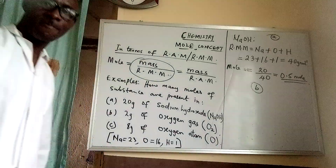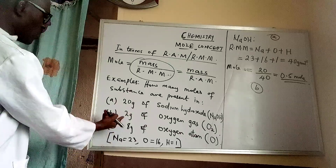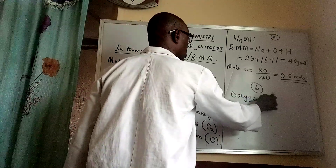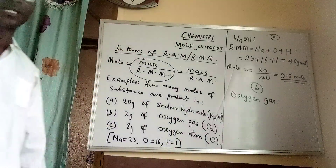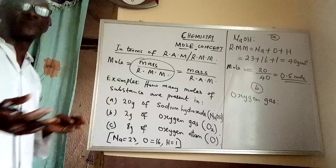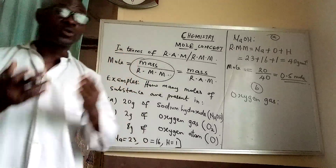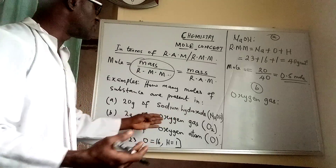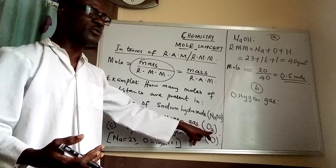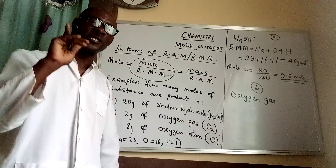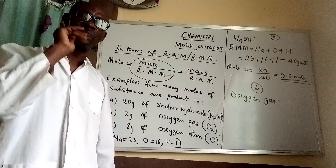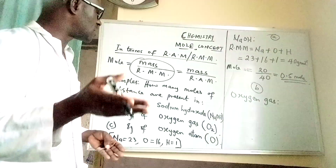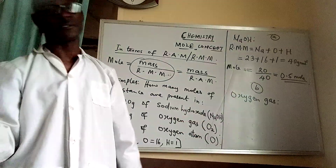For question (b), we have 2 grams of oxygen gas. There is something you need to know about oxygen — oxygen is a diatomic element. When we say oxygen gas, we are referring to a molecule of that gas. A molecule of oxygen gas, being a diatomic element, is written as O₂ — that is, two atoms of oxygen make one molecule of the gas.